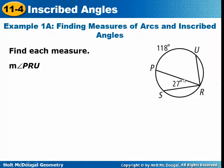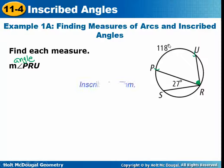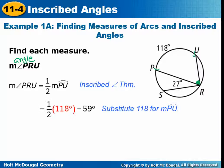Here are a couple different inscribed angles on the same circle. First, they want us to find the measure of angle PRU. That's this angle down here — we need to find it if its intercepted arc is 118 degrees. So all we have to do is take half of 118. The measure of arc PU is 118, and you get 59 degrees for the measure of angle PRU.